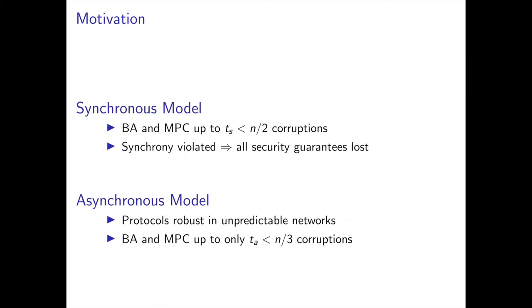The security guarantees achievable in these two models differ. In the synchronous model, both BA and MPC protocols can be achieved that are secure up to n/2 corruptions. However, as soon as the synchrony assumptions on the network are violated, all security guarantees tend to be lost quickly. In the asynchronous model, protocols are robust even in unpredictable networks, but the security guarantees are significantly weaker — for example, BA and MPC protocols can only be achieved up to n/3 corruptions.